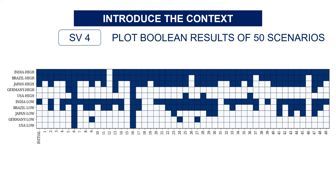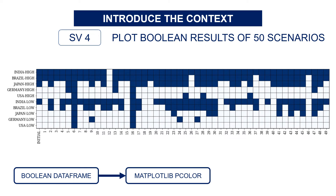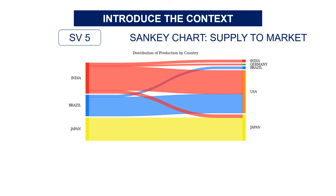For this, you need to do two things. First, create the boolean dataframe — so for each of the scenarios, which boolean is 1 and which boolean is 0. Then you use the Matplotlib pcolor functionality, and you can choose a cmap for coloring — here I chose blue. Now we move to the interesting part: the Sankey chart.